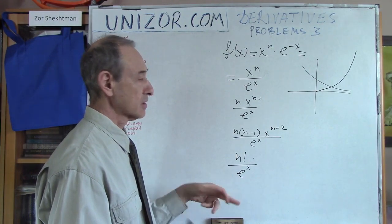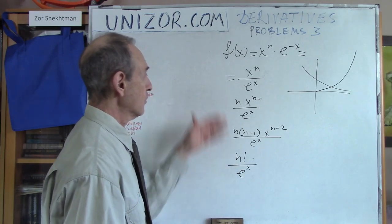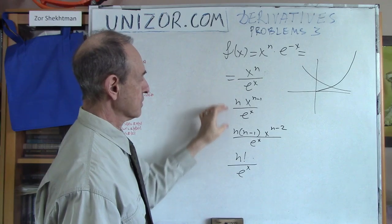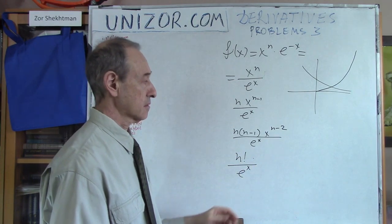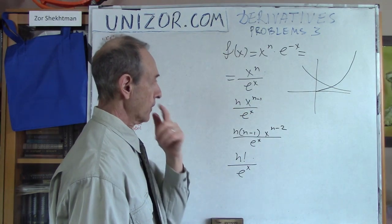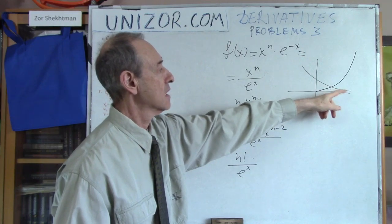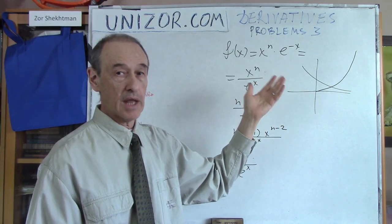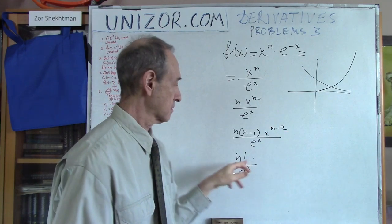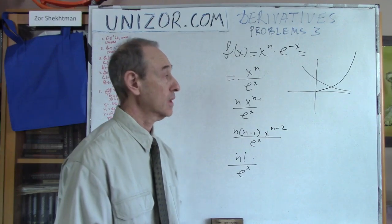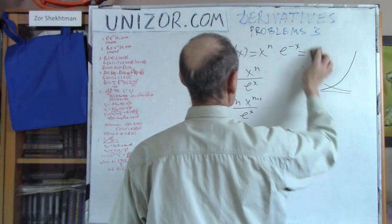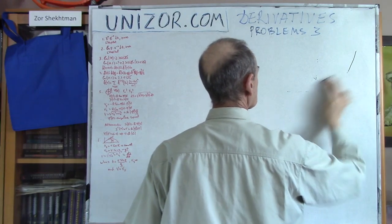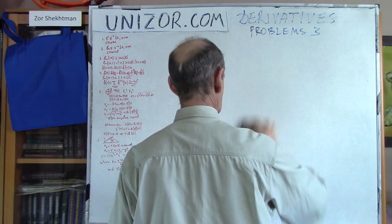Now n factorial is a constant, and this clearly goes to 0. After applying L'Hôpital's rule n times, we've reduced the problem to something easy, and the result is 0. This signifies that e^(−x) goes to zero much faster than x^n for any natural number n. So x^n grows slower than e^(−x) diminishes.